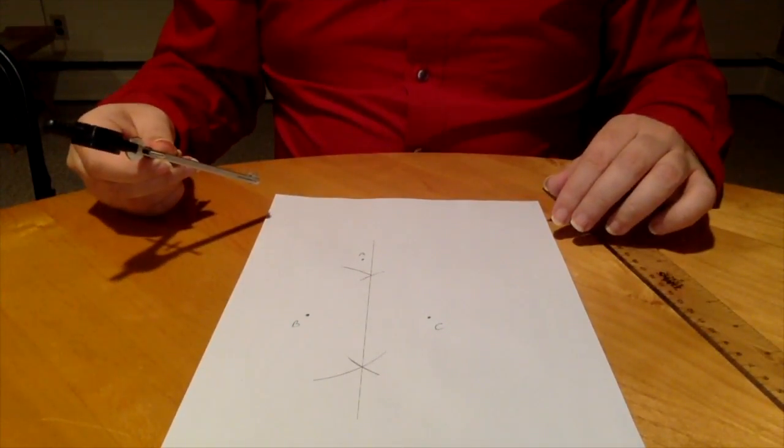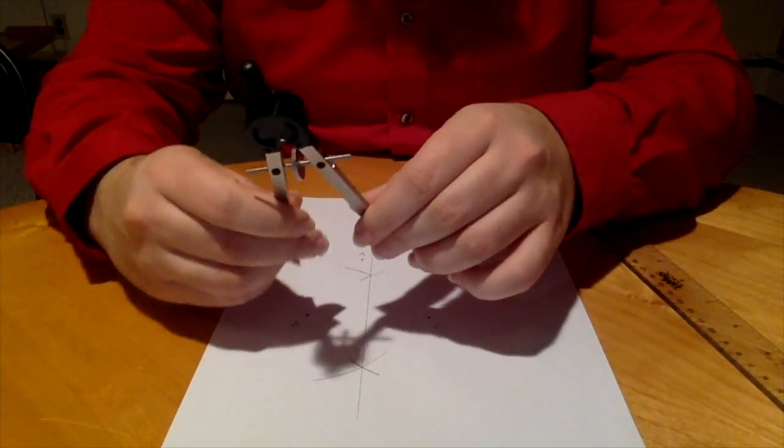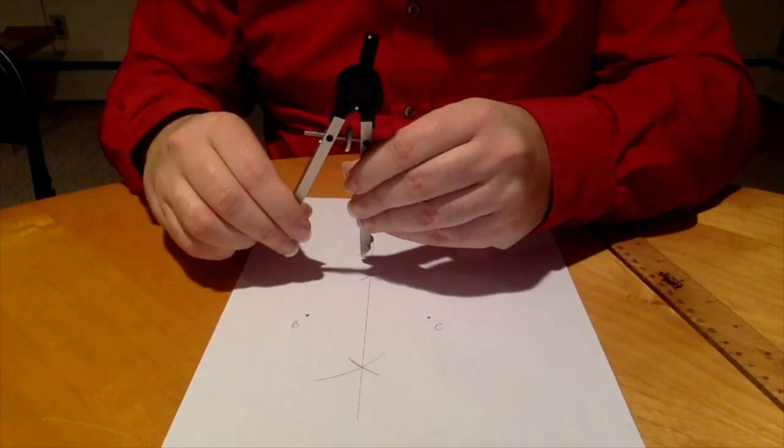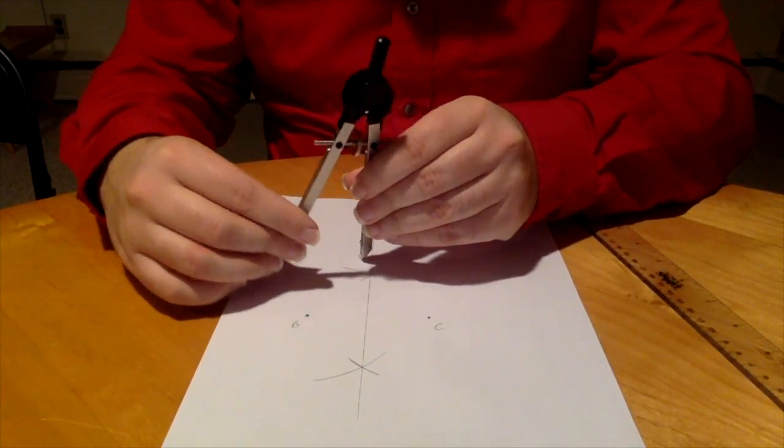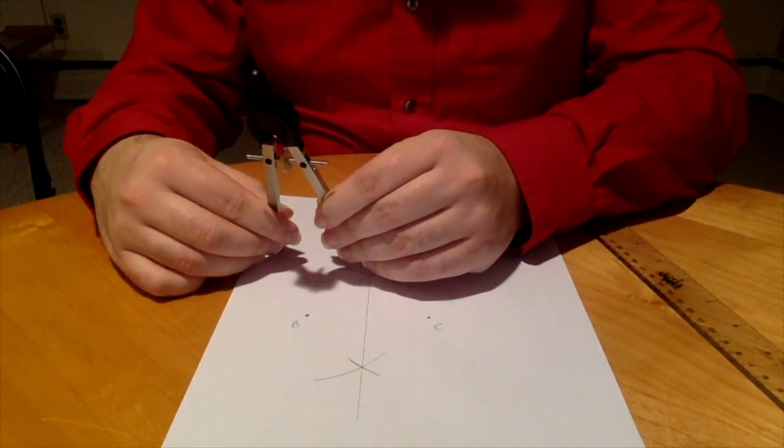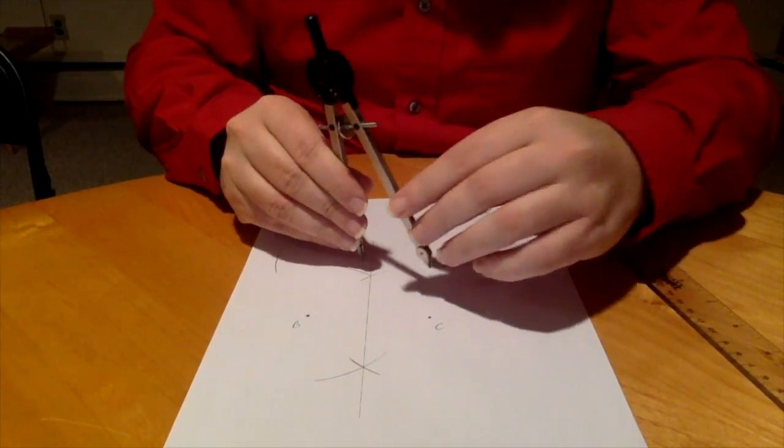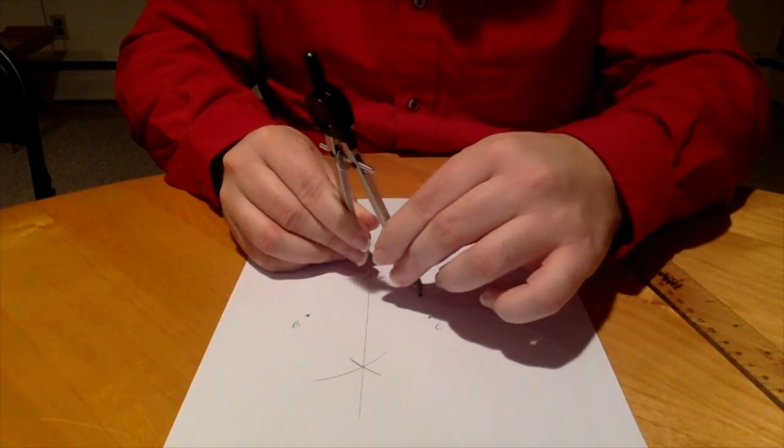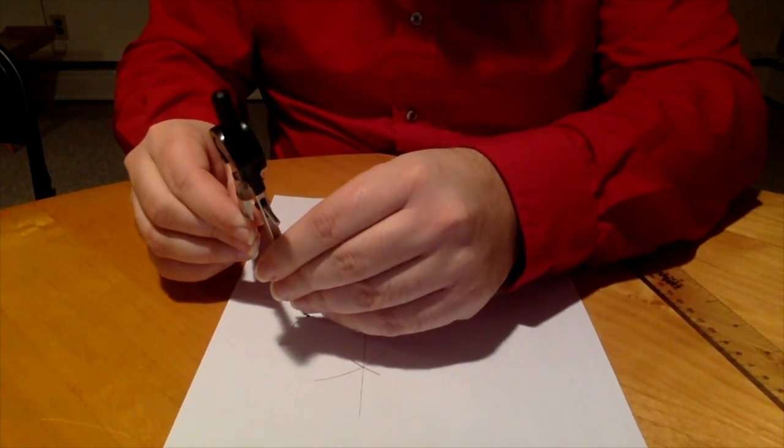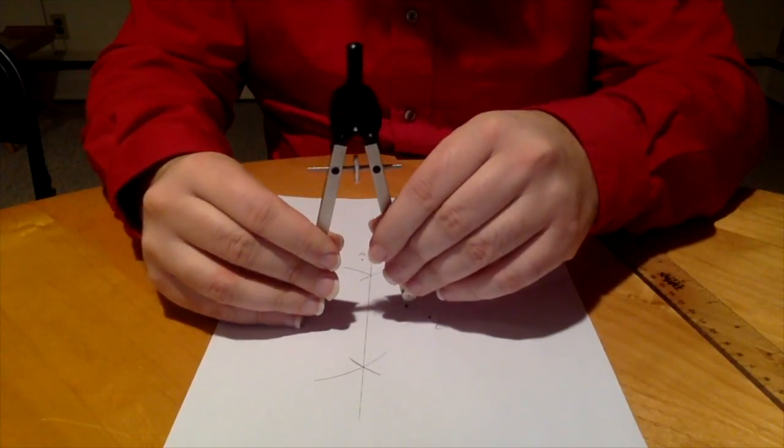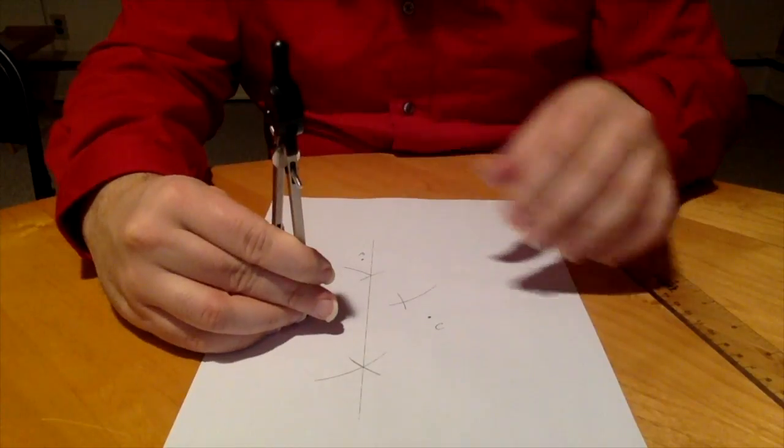Then do the same with two more. It doesn't matter which two. I'll just go A and B, so more than halfway. Above and below. Above and below so they intersect.